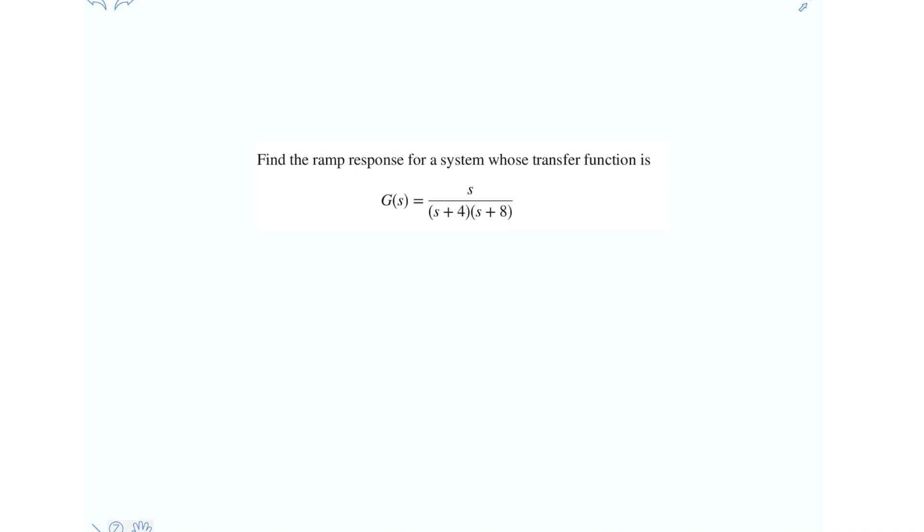Hi friends, let's solve this problem: find the ramp response for a system whose transfer function is given below. G(s) equals s over (s+4) multiplied with (s+8).